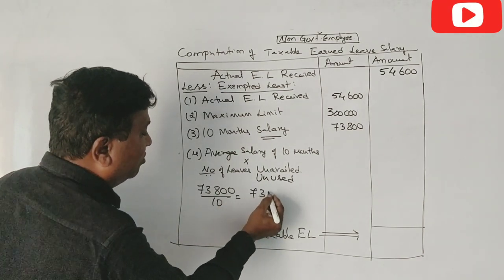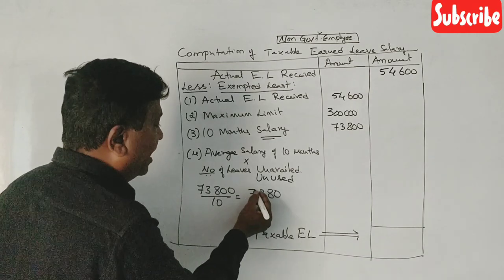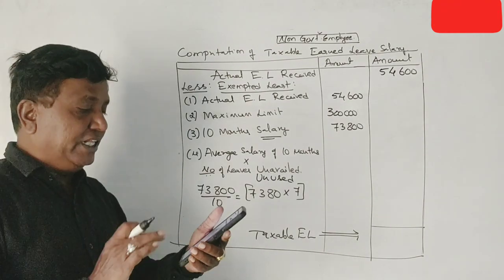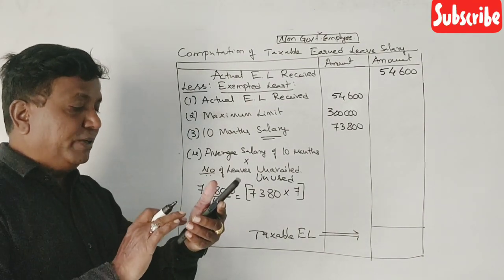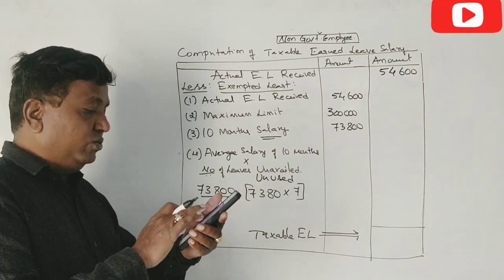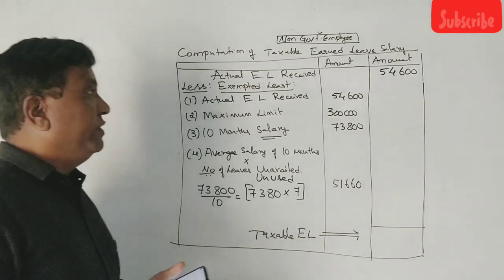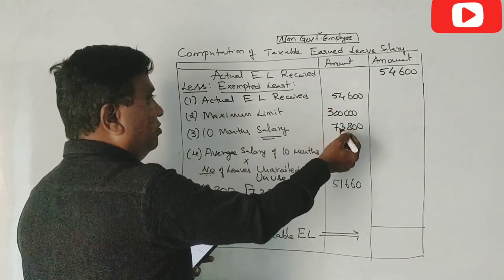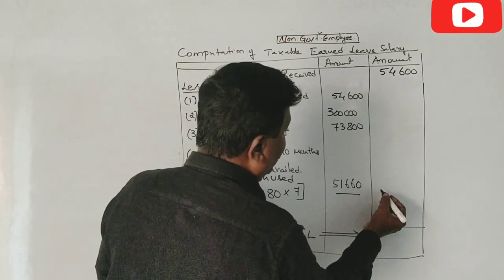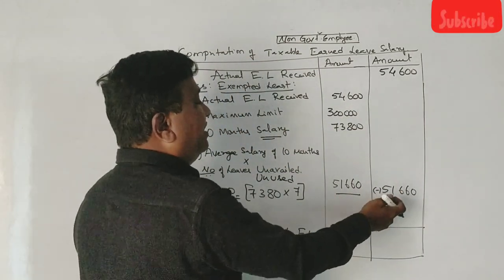He had 7,380 to his credit on the basis of 30 days per year. 7,380 into 7 months, 51,660 rupees. 51,660 rupees.